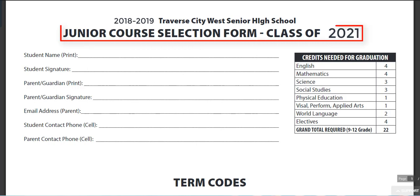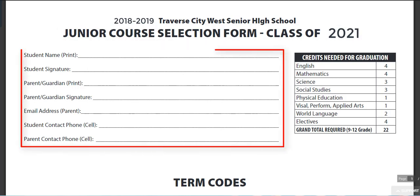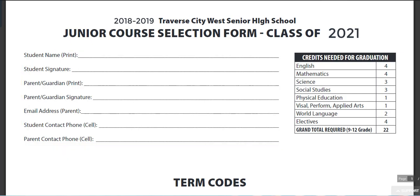This is a copy of your junior course selection form. Please double check to make sure you have your name and signature on the form and your parent information has been added. Your counselor will use this form when you meet with them individually.